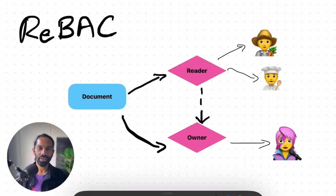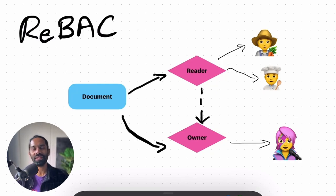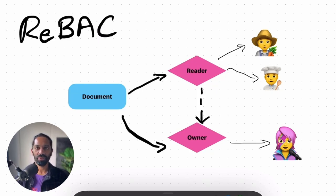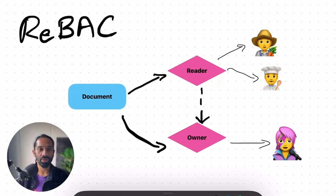Finally, let's talk about the new kid on the block: relationship-based access control or REBAC. Relationship-based access control grew out of the relationship graphs in social networks. In REBAC, access decisions are made based on the relationships between entities — users, resources, environments — rather than relying solely on roles and attributes. REBAC is how Google does planet-scale authorization across their services such as YouTube, Docs and even Cloud IAM.